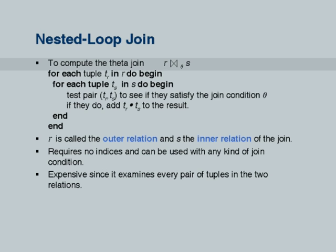Let us say the join condition is of the form R.A = S.A. I have a particular outer tuple right now. What I want is all S tuples with a matching A value. The join is on R and S, and the join attribute for the S relation is attribute A. For a particular outer tuple, I have a value and I need to find exactly those S tuples with that particular A value.